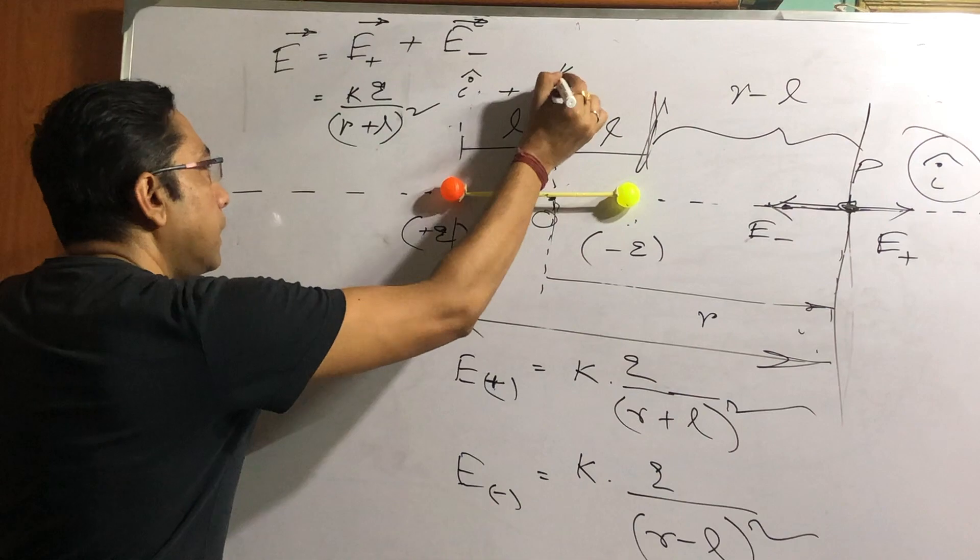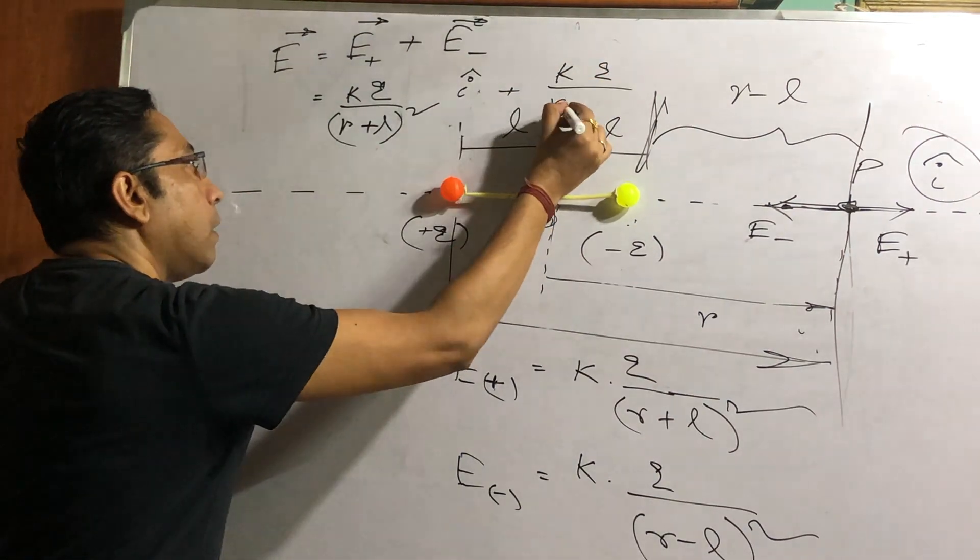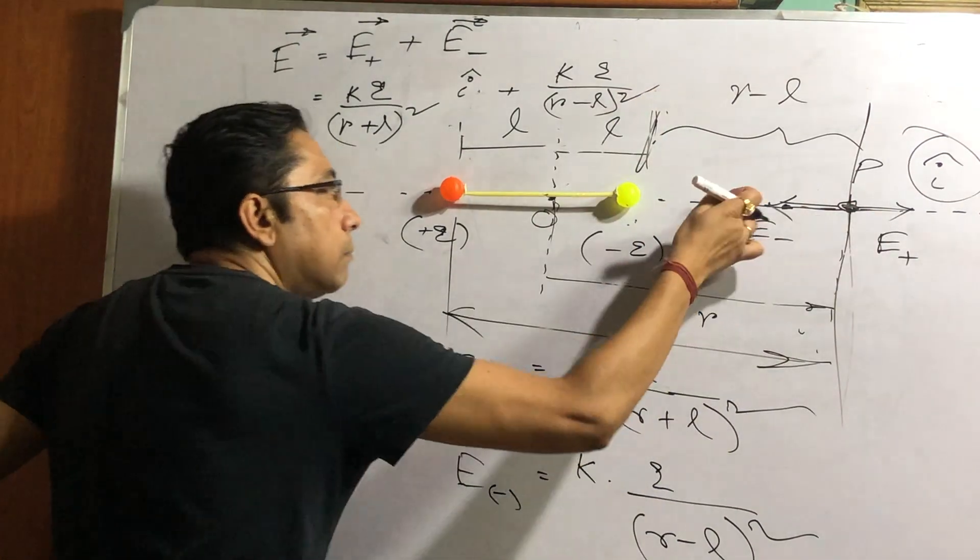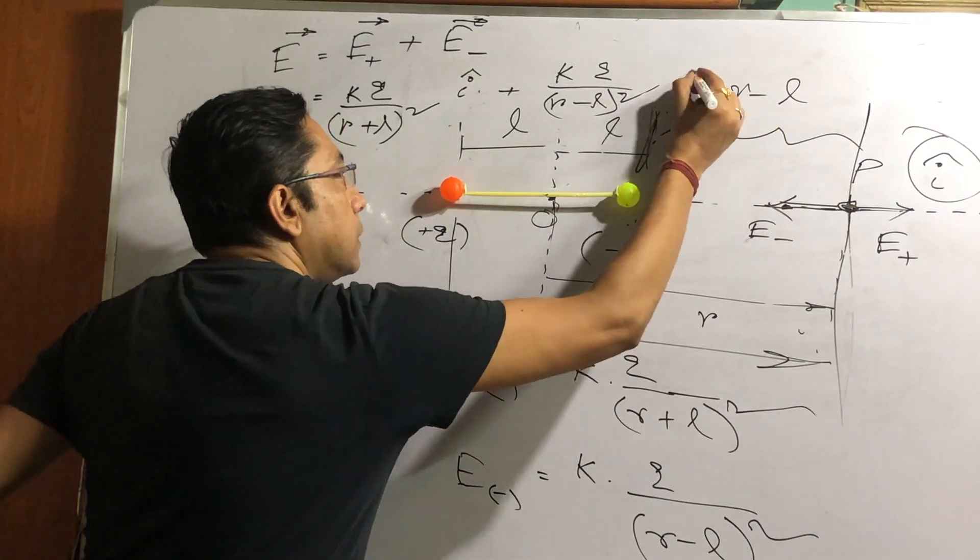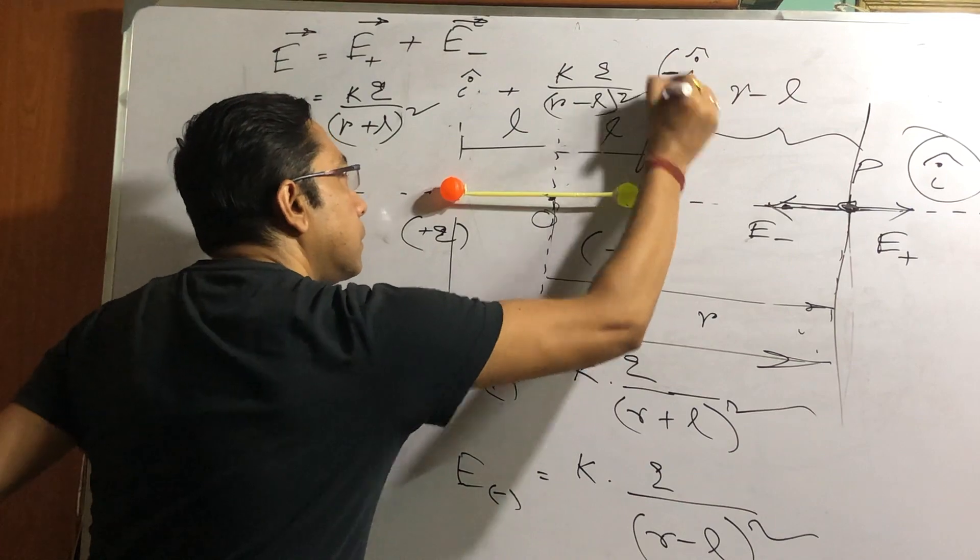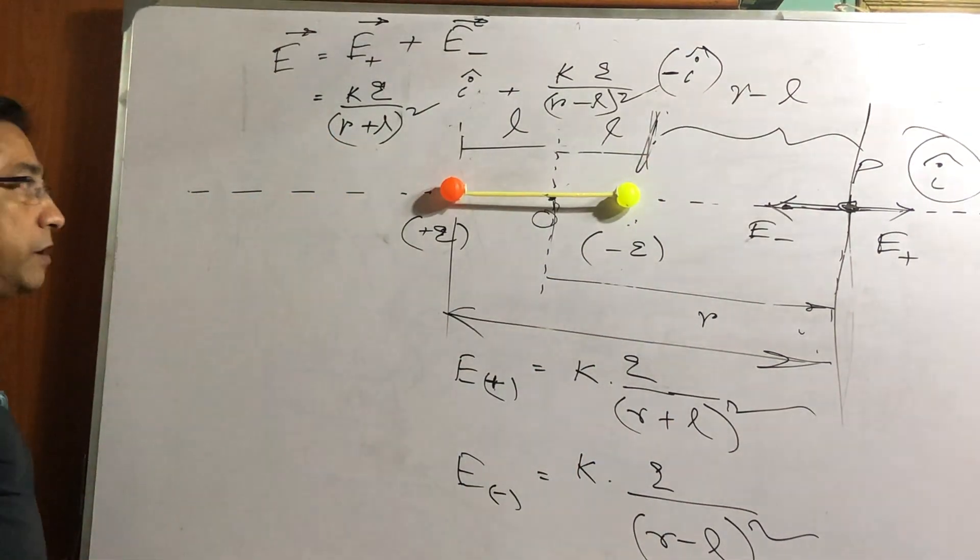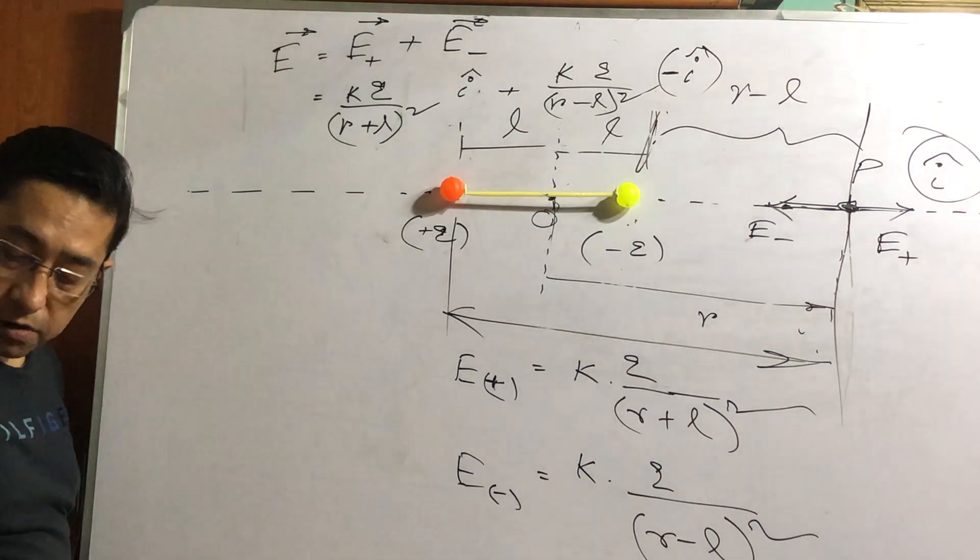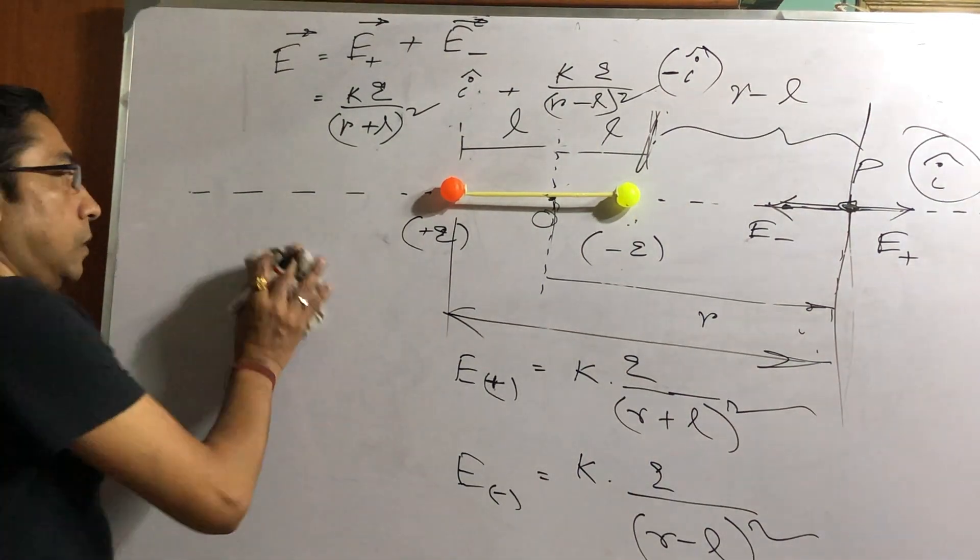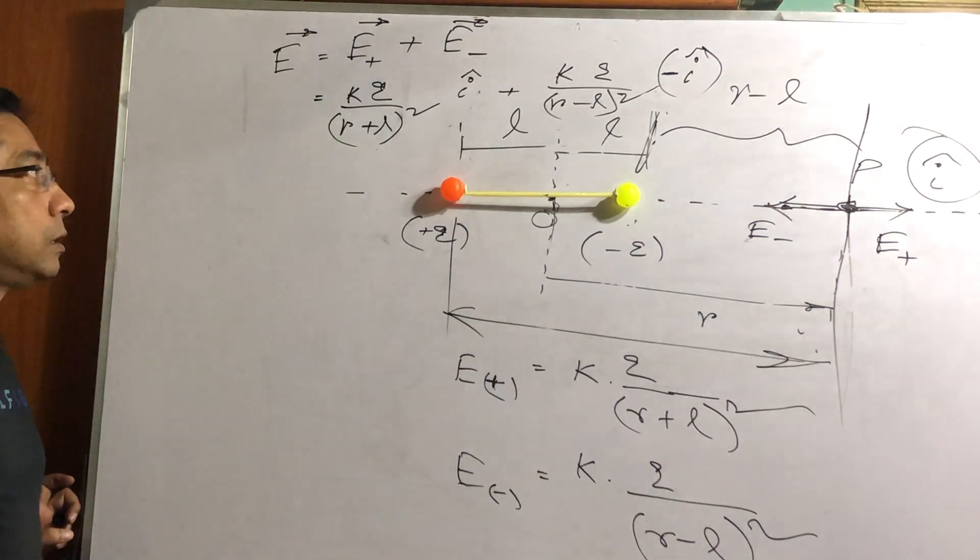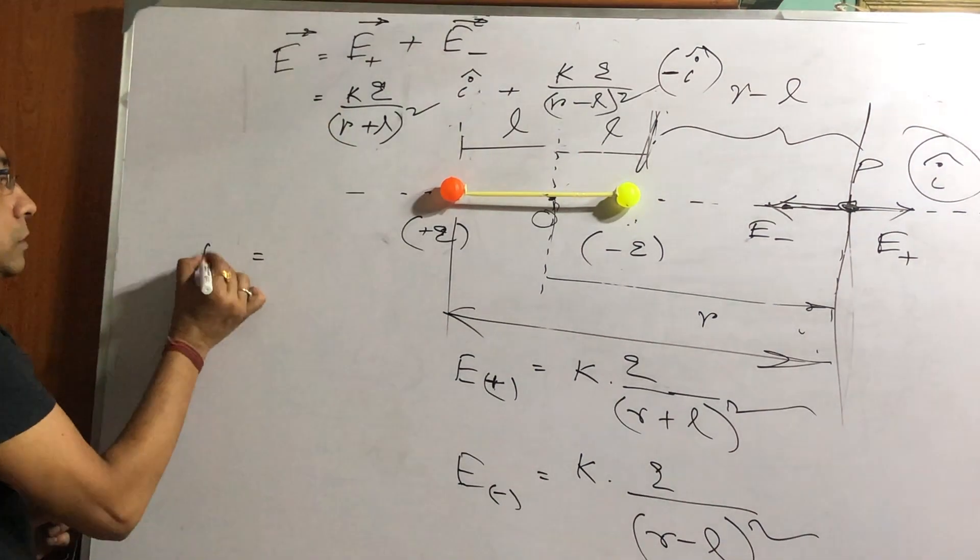Electric field due to the plus charge, i hat direction, X axis. Plus K Q, (R minus L) whole square. What would be its direction? Minus i hat. In this way. Very tough calculation. Very tough. I really fear whether we all would be alive after this or not. Anyway.